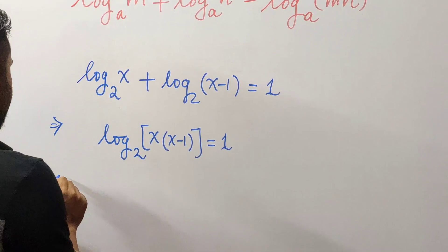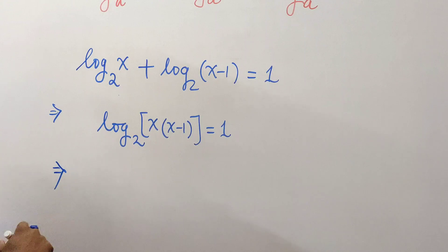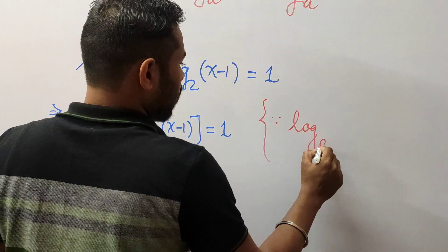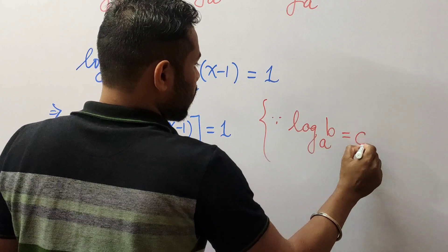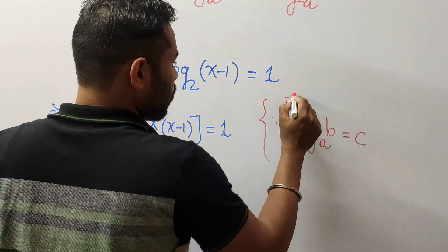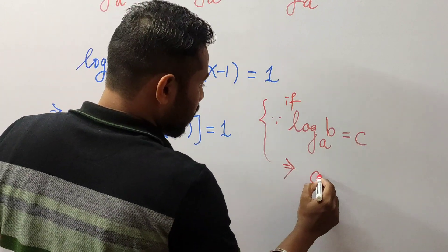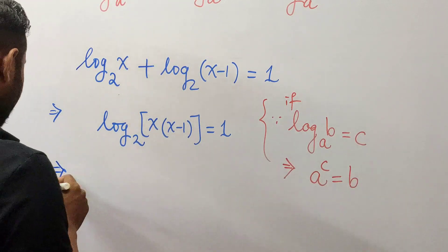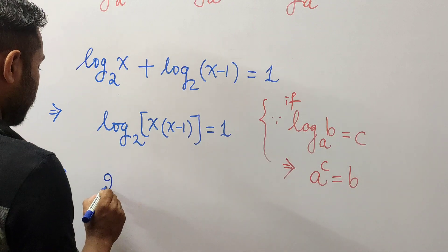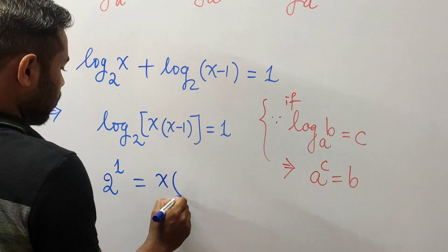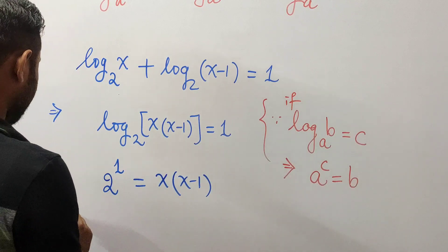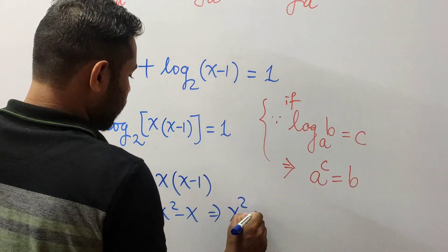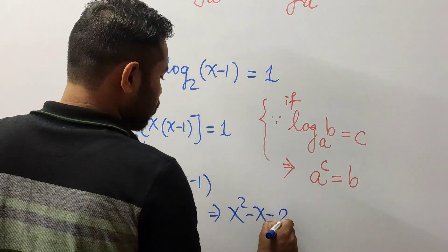Using the definition of logarithm — if log_a(b) equals c, then you can convert it to the exponential equation a to the power c equals b — we can write that 2 to the power 1 must equal x into x minus 1. That is, 2 equals x squared minus x, or x squared minus x minus 2 equals 0.